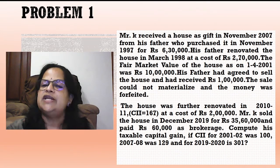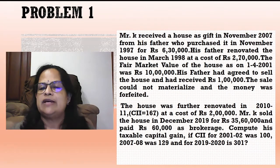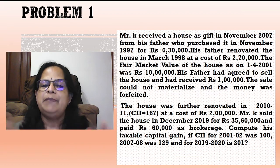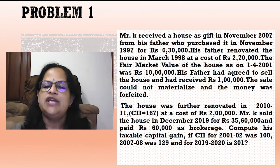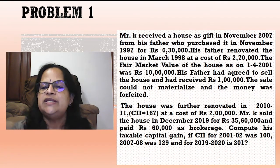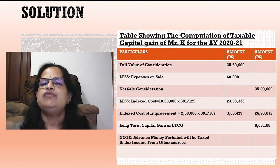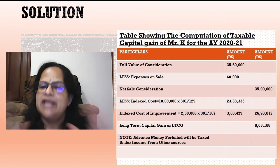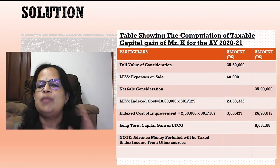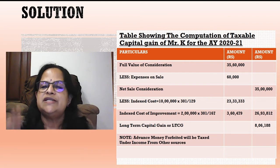The house was further renovated in 2010-11 with CII of 167 at a cost of ₹2 lakhs — this is after 2001 so it must be indexed. Mr. K sold the house in December 2019 for ₹35,60,000 and paid ₹60,000 as brokerage. CII values: 2001-02 = 100, 2007-08 = 129, 2019-20 = 301. Compute the taxable capital gain.